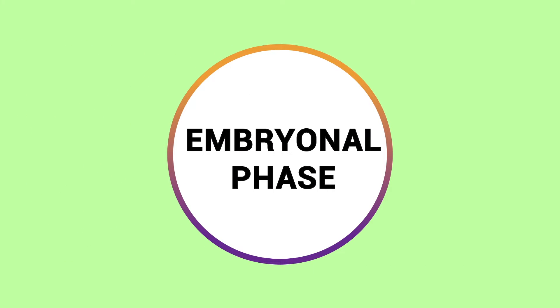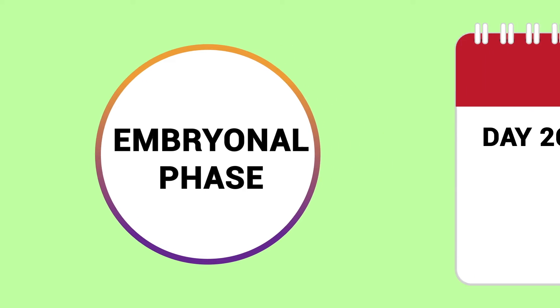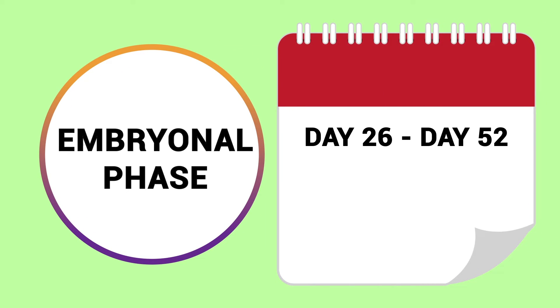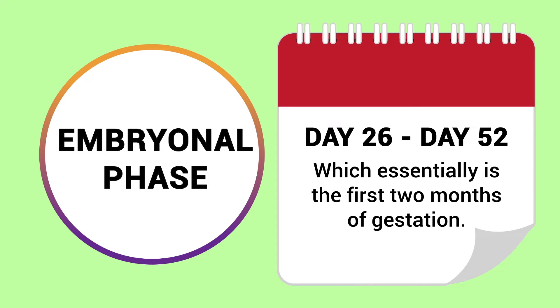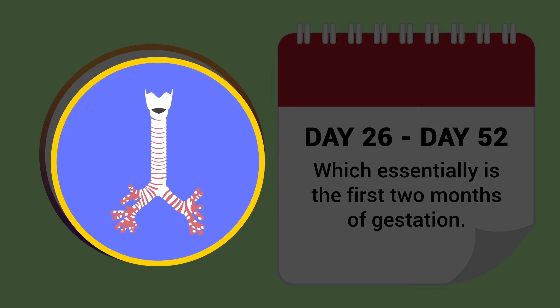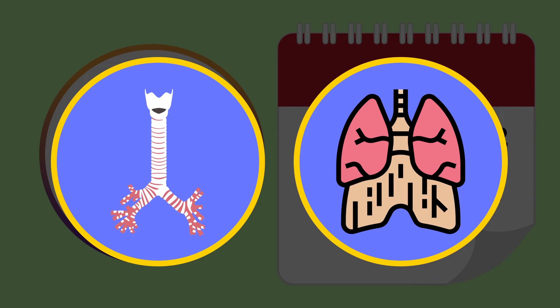First, we have the embryonal phase. This phase occurs from approximately day 26 to day 52, which is essentially the first two months of gestation. This is when the development of the trachea, major bronchi, and the diaphragm occurs.